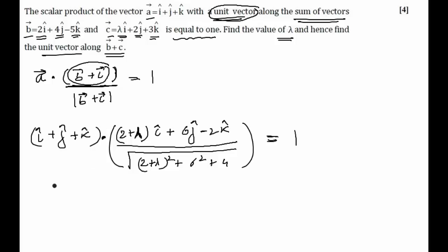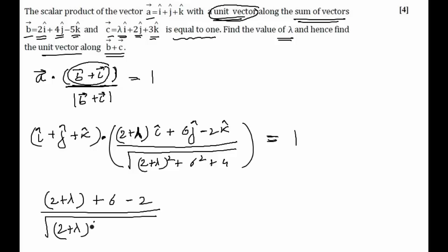Taking the dot product, I get one equation in lambda: (2 + lambda + 6 − 2) divided by under root of (2 + lambda)² + 40 = 1. On solving this equation, you square both sides and get a quadratic equation in lambda, where the lambda-squared terms cancel out, and you get the value of lambda equal to 1.